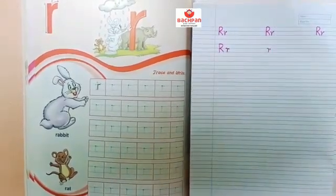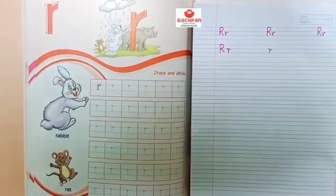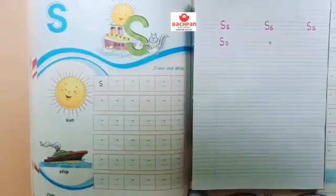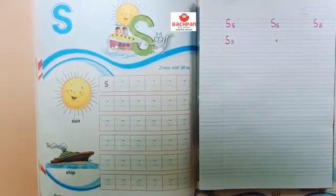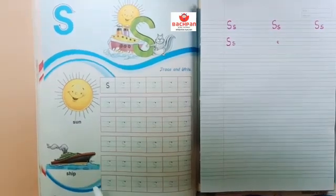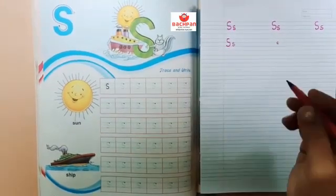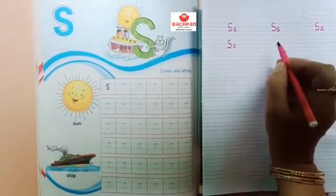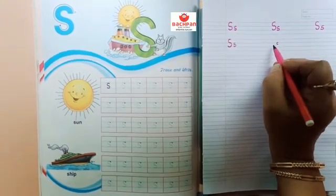R for rabbit. R for rat. After R which letter has come? S. S for sun. S for ship. For capital S we have to use three lines.